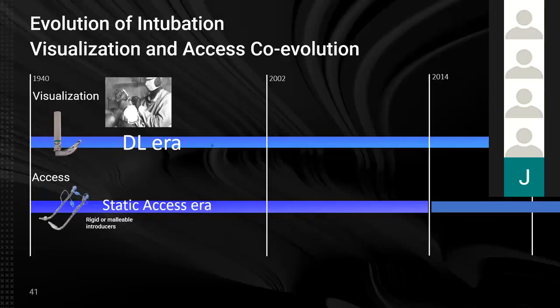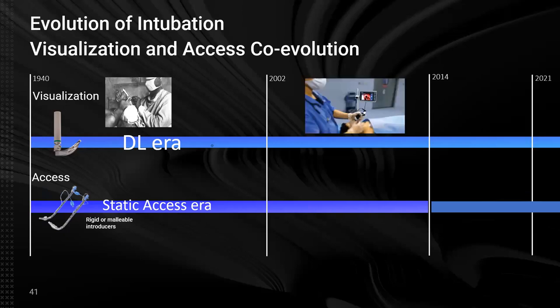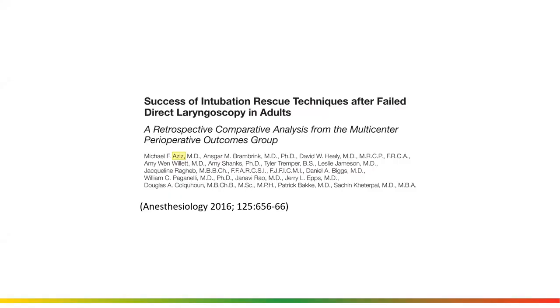Going back to our visualization and access co-evolution: static access era, then VL, which improved visualization and made it easy to see. You can become an expert at seeing the glottis with VL in about five attempts. With direct laryngoscopy, it's somewhere between 50 and 100 attempts. That's the VL era.